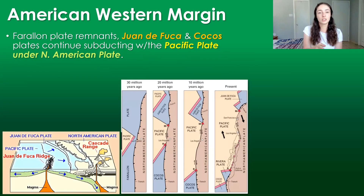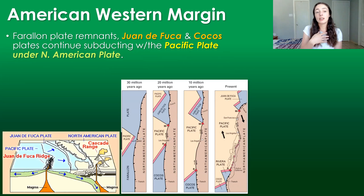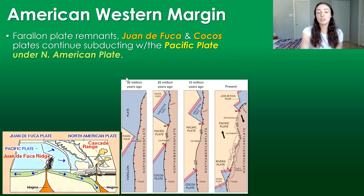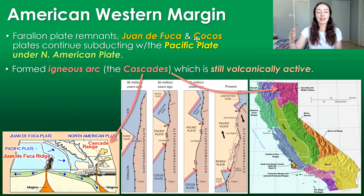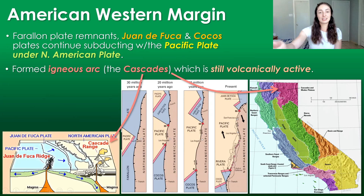The Farallon plate — the plate that subducted under the western margin of North America during the Mesozoic and into the early Cenozoic — had largely been subducted and was completely gone underneath the North American plate. But remnants of the Farallon plate still existed to the north and south as the Juan de Fuca plate and the Cocos plate, and the plate coming in behind it was the Pacific plate, which continues to subduct under North America today. The subduction to the northwestern region of the U.S. formed the igneous arc we now call the Cascade Range, which is still volcanically active today. We can see in the figure to the bottom left how this subduction causes melting that leads to the igneous arc that forms the Cascade Range.